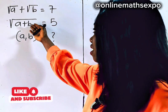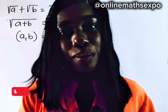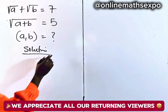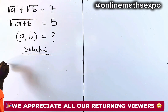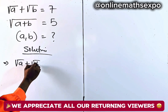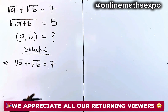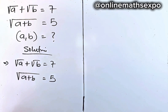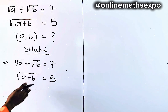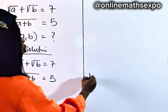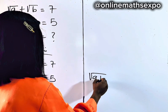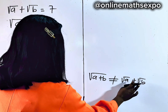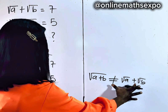Now when you see this equation, how do you solve it? The first equation is √a + √b = 7, and the second equation is √(a + b) = 5. Please remember: in the rules of radicals, √(a + b) is not the same as √a + √b. You cannot split this root — these two are not the same.